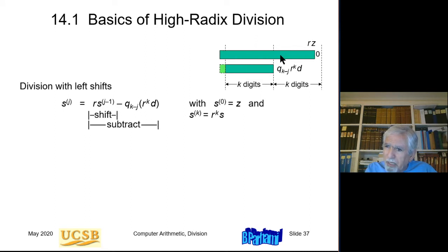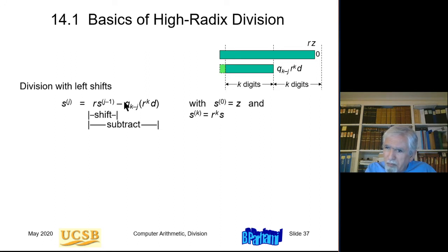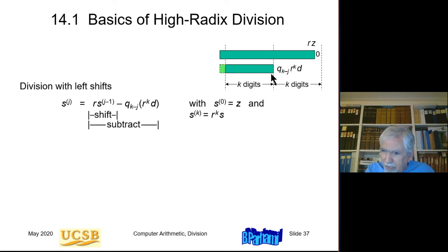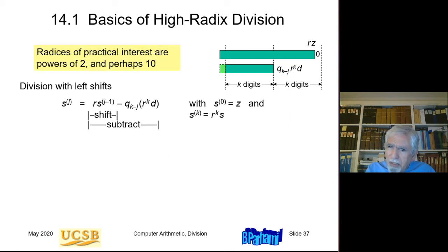Z is left-shifted by one digit and the product of q_{k-j} times r^k times d is subtracted. Notice that this part was absent in the binary case because the quotient digit is zero or one, so the width equals the divisor width. In this case, the value being subtracted can be one digit wider than the divisor. Radices of practical interest are powers of 2 — radix 4, 8, 16 — and perhaps 10.